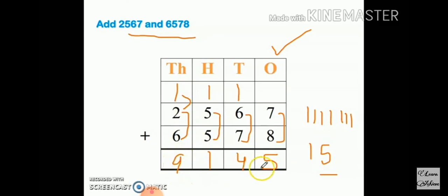1 plus 6 equals 7, 7 plus 7 equals 14. Again two numbers, so unit place gets 4 and tens 1 carry here.